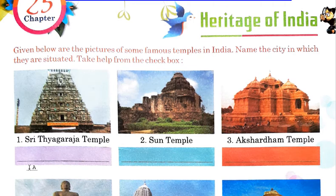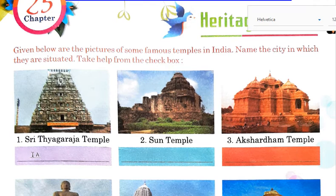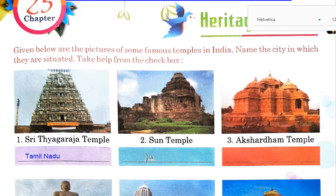So students, this first temple is situated in Tamil Nadu, so you can write Tamil Nadu here. The next one is the Sun Temple. Sun Temple is in Konark, and Konark is in Odisha. So you can write Odisha here.